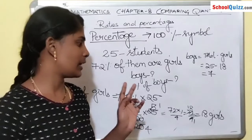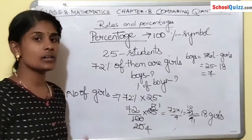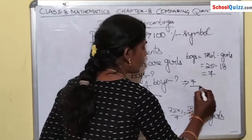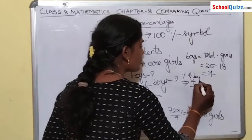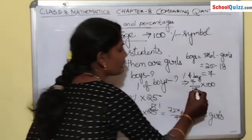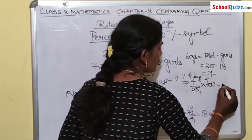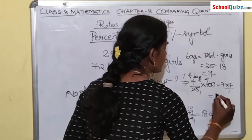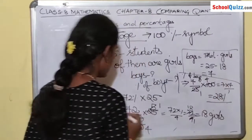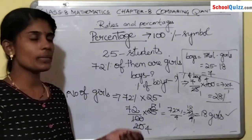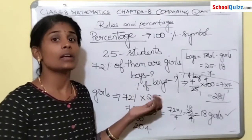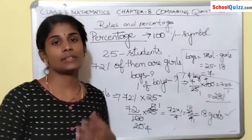So in the class there are 18 girls and 7 boys. Now let us find the percentage of boys: (boys / total) × 100 = (7/25) × 100. Simplifying: 25 cancels into 100 giving 4, so 7 × 4 = 28%. So the percentage of boys is 28%. When percentage is given we can find the required number, and we can also find the percentage of the other group.